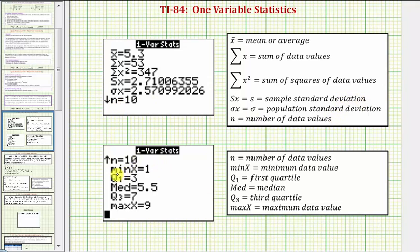On the second page, we have X min, which is the minimum data value. Q1, which is the first quartile. MED, which is the median. Q3 equals the third quartile. And finally, max X is the maximum data value.